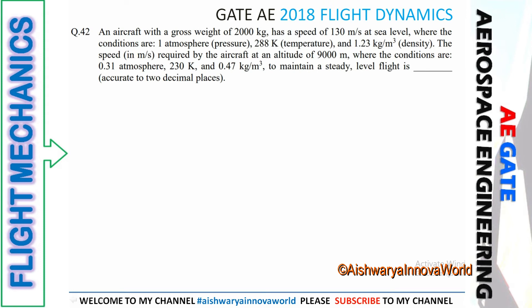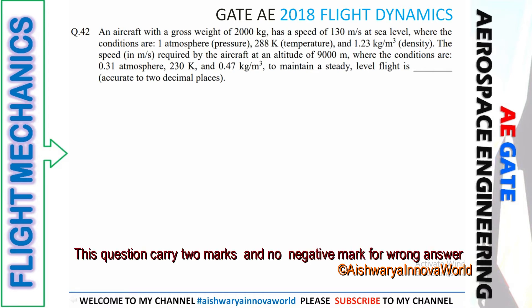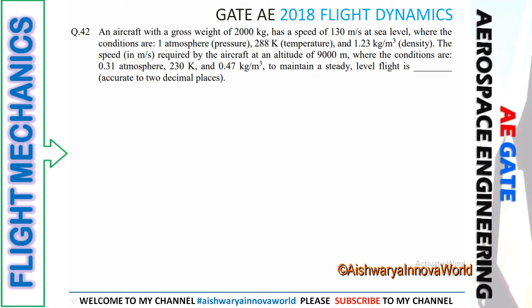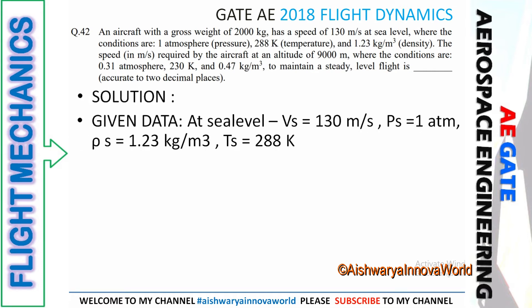Next question: an aircraft with gross weight 2,000 kg has a speed of 130 m/s at sea level, where conditions are 1 atmosphere, 288 K, and density 1.23 kg/m³. Find the speed in m/s required to maintain steady level flight at 9,000 m altitude, where conditions are 0.31 atmosphere, 230 K, and density 0.47 kg/m³, accurate to two decimal places.